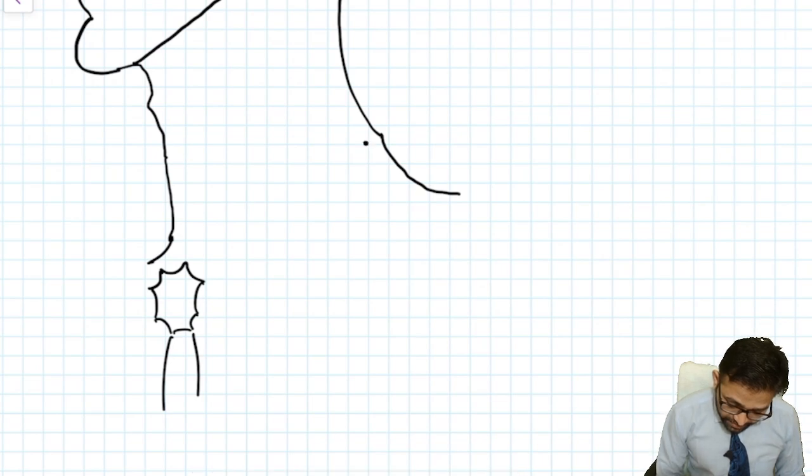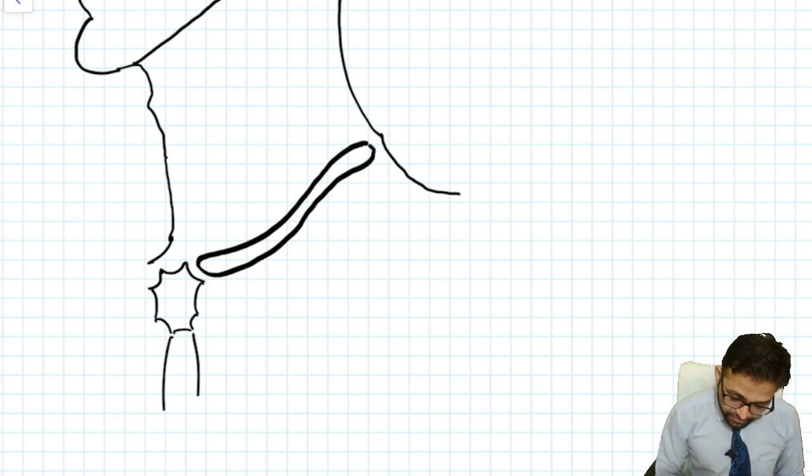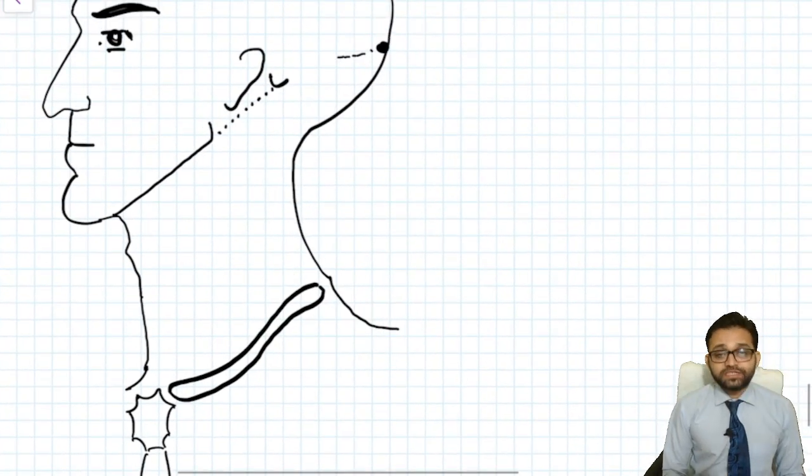Now here I told you there is our manubrium of sternum, body of sternum and here we presented our clavicle. Suppose this is the clavicle, fine. Now one by one, step by step.